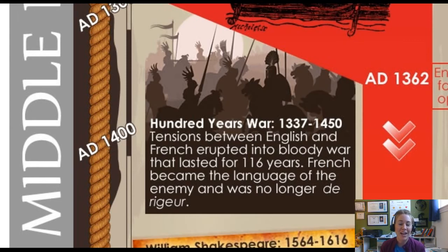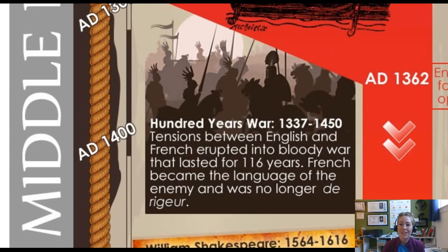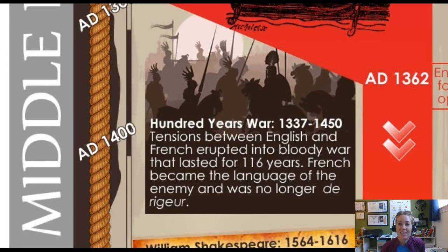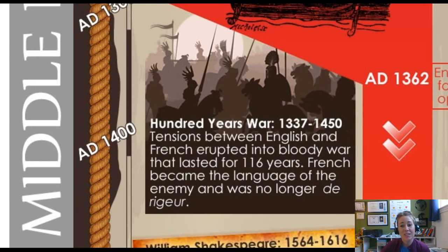Back to the infographic: the French stayed in the area a long time — something like 200 years — leaving around 1337, which began what was known as the Hundred Years' War. It's a bit of a misnomer because it actually lasted about 116 years. The English fought the French and prevailed, officially kicking out the French in 1450. For the first time, English replaced French as the language of the country — Parliament was conducted in English for the first time after several hundred years of French.